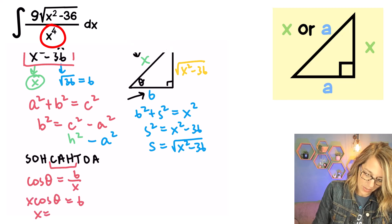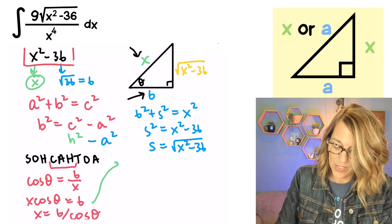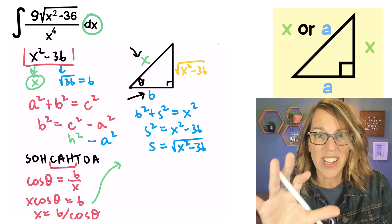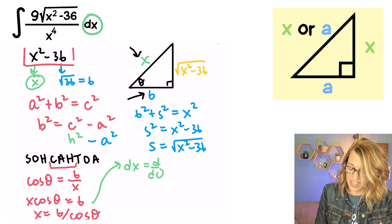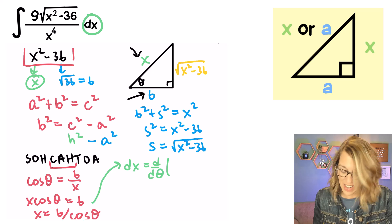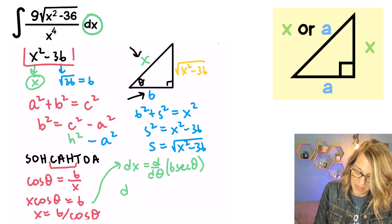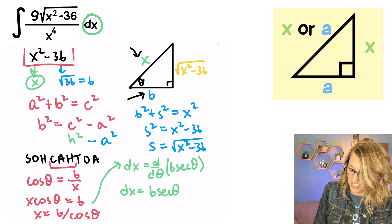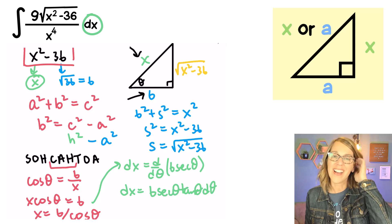So x equals 6 divided by cosine theta. I'll also use this to find dx in terms of theta by taking the derivative. Rewriting as 6 secant theta, the derivative of secant is secant tangent, so dx equals 6 secant theta tangent theta dθ.